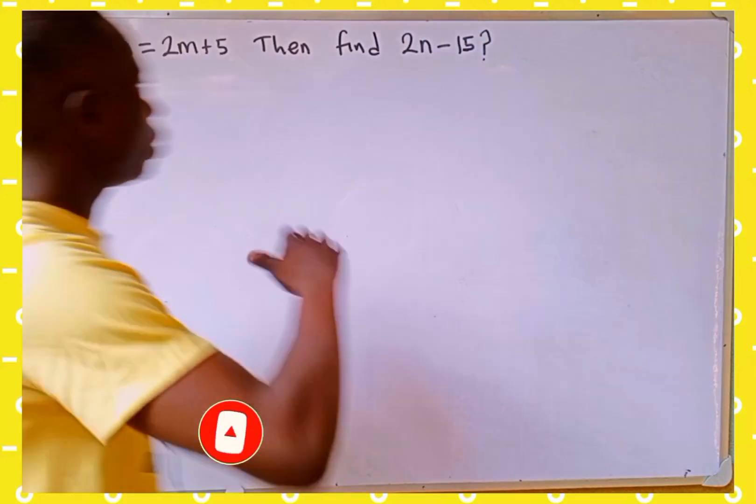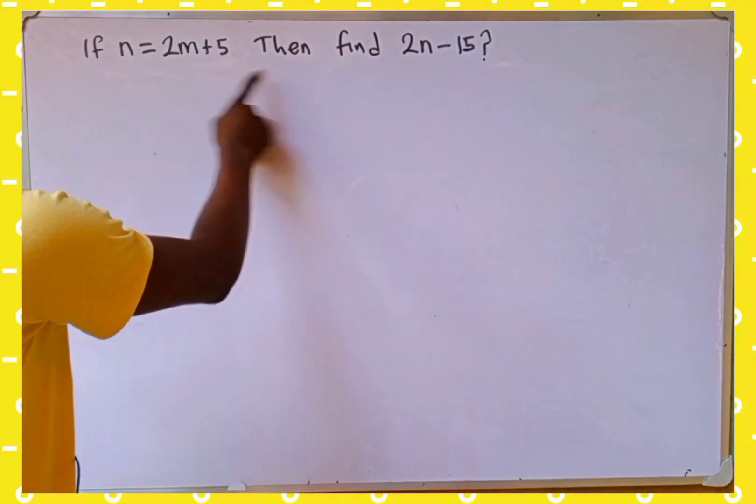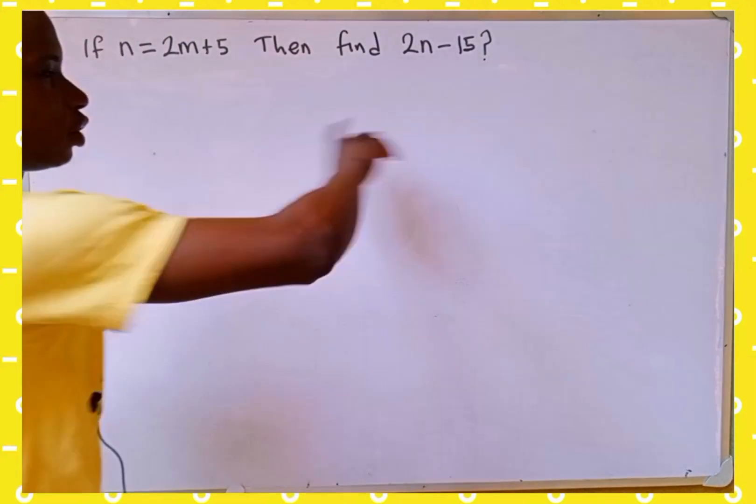The question on the board reads: if n is equal to 2m plus 5, then find 2n minus 15.